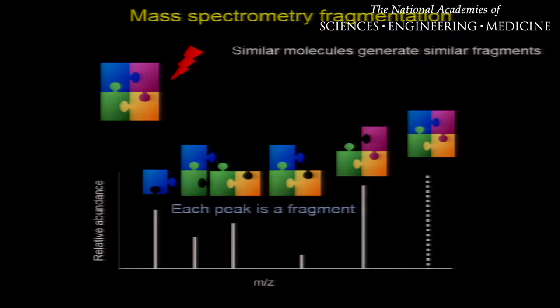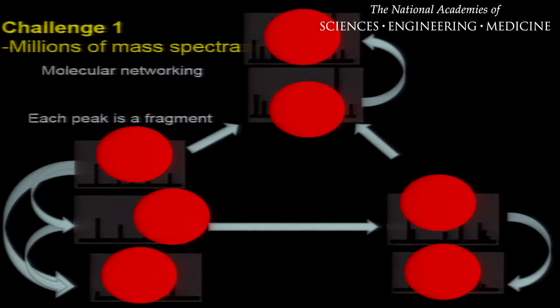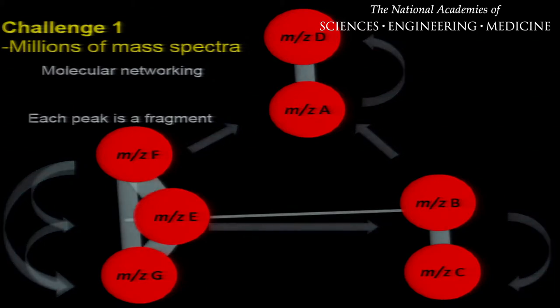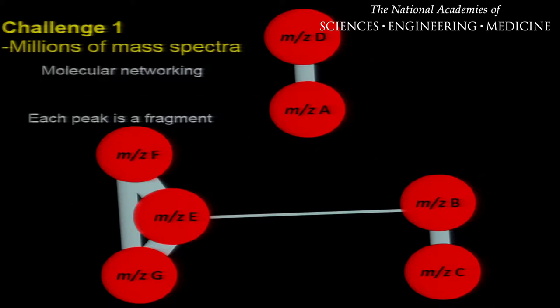We use a trick in mass spectrometry to respond to this challenge. When you energize a molecule in a mass spectrometer, it falls apart to generate fragments. Similar molecules — that is, molecules that are similar in structure — generate similar fragments. So we can organize our spectra based upon these similar fragments, ending up with molecular networks where each spectrum or each molecule is represented by a node, and connecting nodes represent molecules that are similar in structure. Using this strategy, we can organize our entire data sets into a map of molecular families.